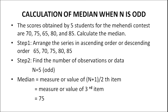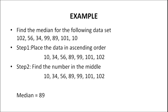In Step 1, arrange the series in ascending order: 65, 70, 75, 80 and 85. Step 2: find the number of observations. By counting, n equals 5, which is an odd number. Median equals the value of the (n+1)/2 th item, which is the value of the 3rd item. The third item is 75, so median is 75.